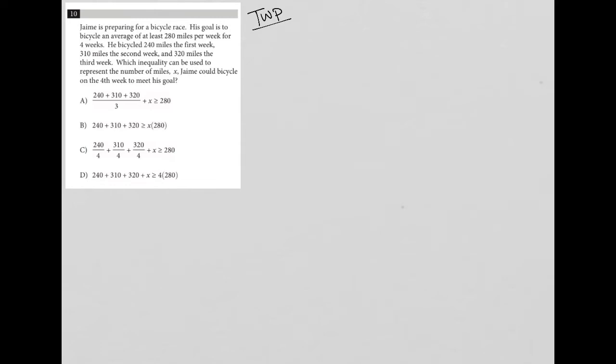I want to translate as I read. The question says Jamie is preparing for a bicycle race. His goal is to bicycle an average of at least 280 miles per week for four weeks. So there's some quantitative information. He wants an average of at least, which means greater than or equal to 280 miles per week for four weeks.